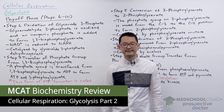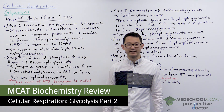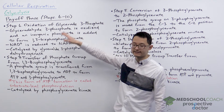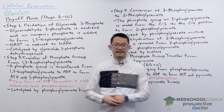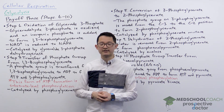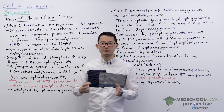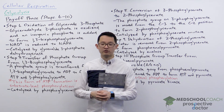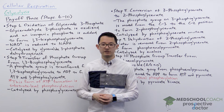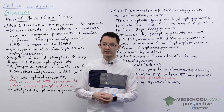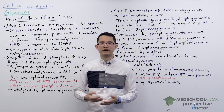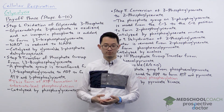In this video we're going to continue our discussion on glycolysis by going over the payoff phase. In the last video we discussed the preparatory phase of glycolysis, steps one through five, where glucose was broken down into two molecules of glyceraldehyde 3-phosphate and two molecules of ATP were invested in this process.